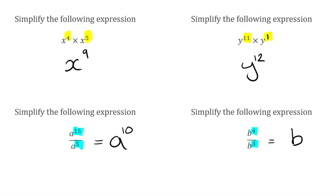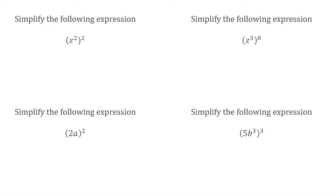Let's have a look at a few more questions. For this first example, we've got z squared, and we're then raising that to the power of 2. Going back to our indice laws, when we raise a power to a further power, we actually have to multiply the indices. So z squared raised to the power of 2: we do 2 multiplied by 2, which is 4. So this would be z to the power of 4.